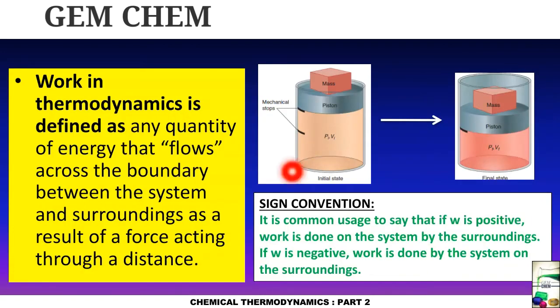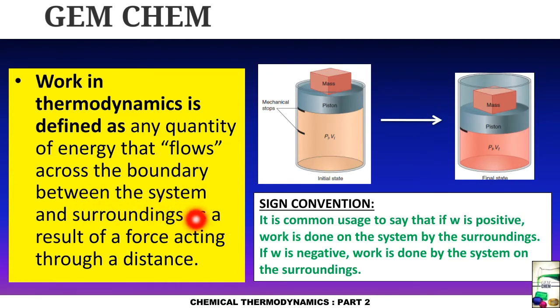What do we mean by work in thermodynamics? Work is defined as any quantity of energy that flows across the boundary between the system and the surroundings as a result of a force acting through a distance. It is a flow of energy across a boundary, given by force into displacement — the familiar formula W = F × d.